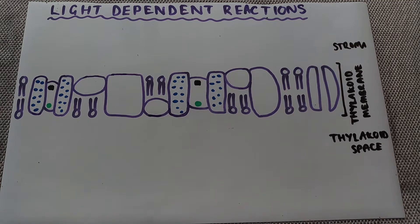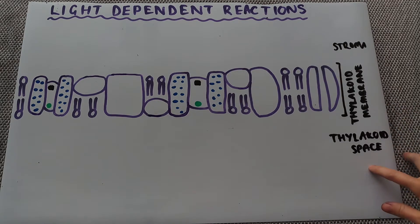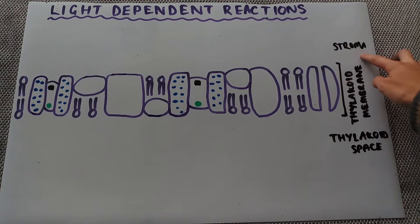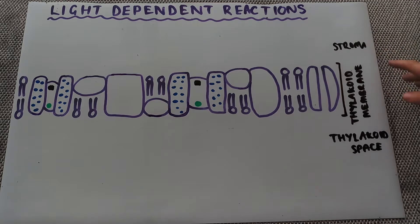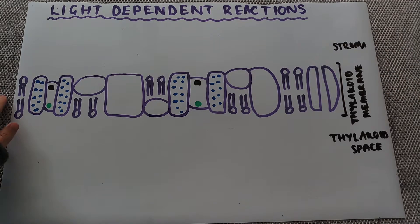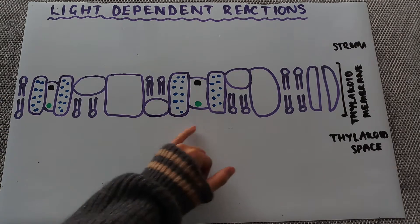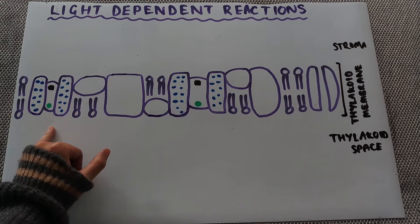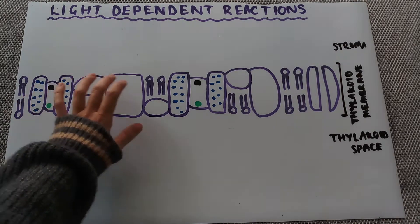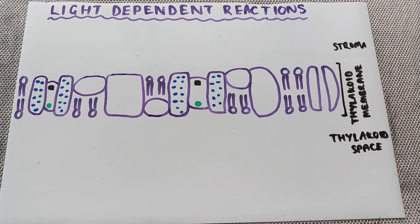In this video we're going to have a look at the light dependent reactions that happen in photosynthesis. Just a reminder: these happen in the thylakoid membrane. This side is within the thylakoid — the thylakoid space — and outside is the stroma, still within the chloroplast but outside of the thylakoid. As you can see from this membrane it's quite complicated; we've got a couple of photosystems and a number of different proteins inside the membrane which we'll go through as we go through this video.